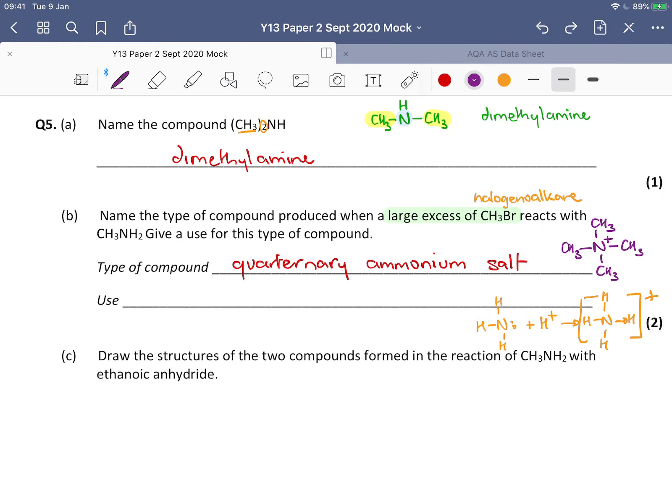Now you have to remember, it's a fact to learn about what quaternary ammonium salts are used for. But they can be used for surfactants, for detergents, for hair conditioner, and I'm going to write fabric softener.